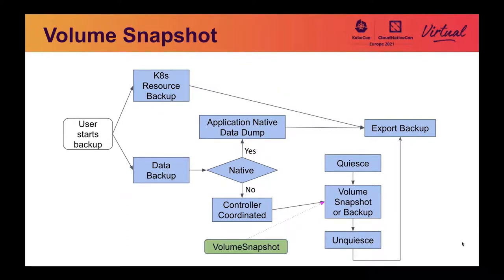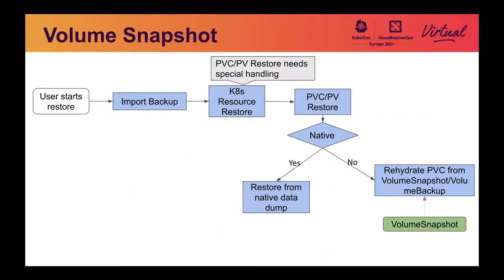The volume snapshot feature sits mainly in the controller-coordinated workflow, where the controller can create a volume snapshot object and this will trigger a snapshot of the system after the quiesce hook is called. And in the restoration workflow, a volume snapshot can be directly used to rehydrate a PVC from it.